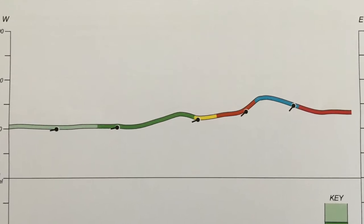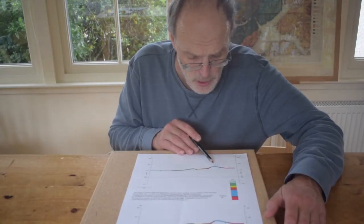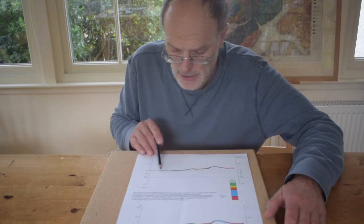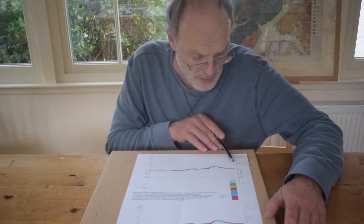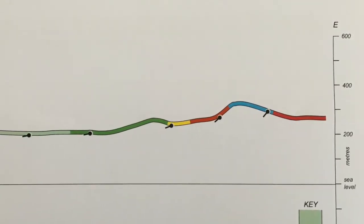And we can see this stratigraphic order here as we go from the red, blue, orange, yellow, dark green, light green as we move from east, this right hand side, to west, this left hand side of the profile.